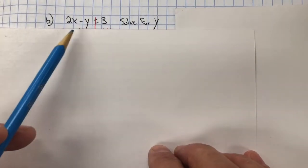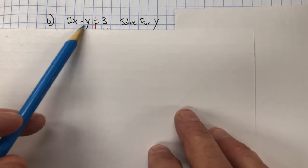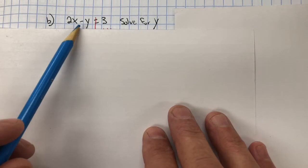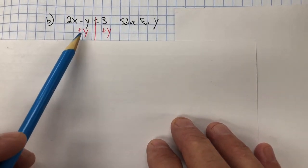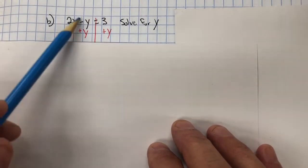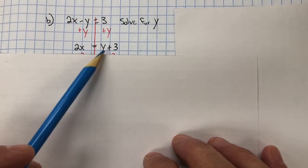For part B, we're going to solve for Y. I have a negative Y, and I don't want to know what negative Y equals, so I want to make it positive. So I'm going to do the inverse property of subtraction, which is addition. I'm going to add Y to both sides. That creates a zero pair, and I'm left with 2X equals positive Y plus 3.